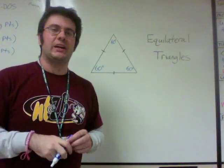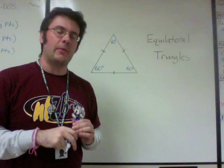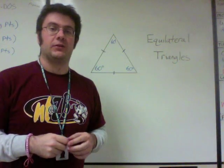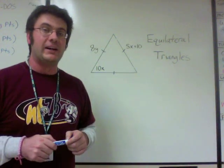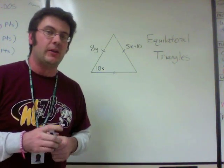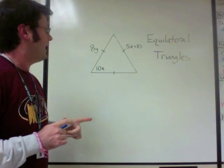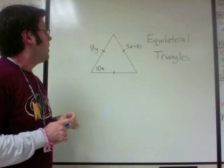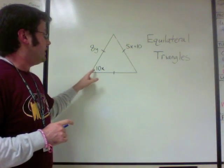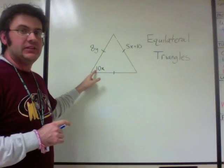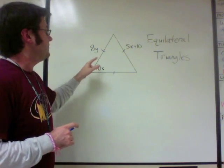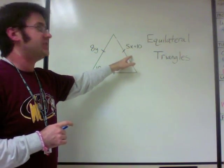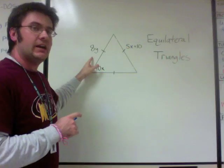So let's take a look at a quick example problem using equilateral triangles. We have to solve for x and we have to solve for y. We can see here that this angle is equal to 10x, and these two sides are equal to 5x plus 10 and 8y.